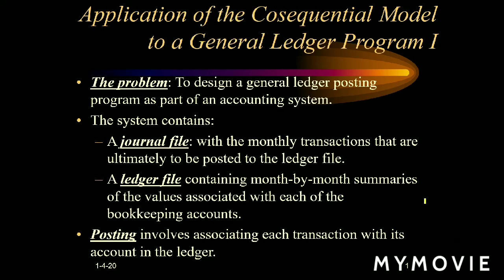This is a general ledger program. Here we are going to see a problem which mainly deals with an account system. We need to understand important terms: journal file, ledger file, and posting. A journal file is a file which contains all transactions within a month. A ledger file contains a summary of every month's transactions forwarded by the journal file. Posting is the process of sending monthly transactions to the ledger file — it is the association of each transaction for an account to the ledger.